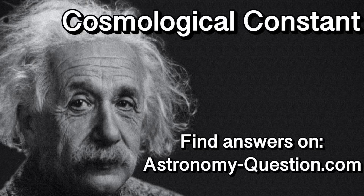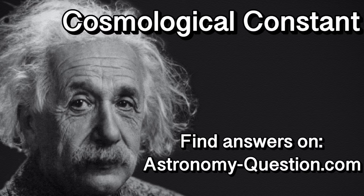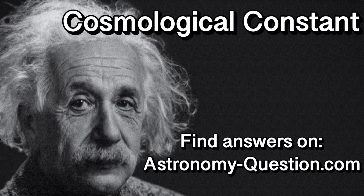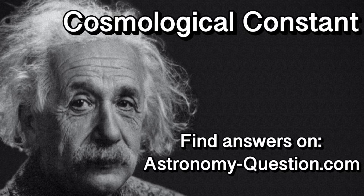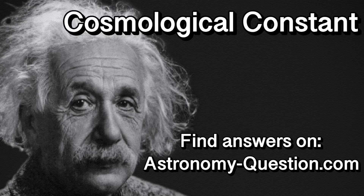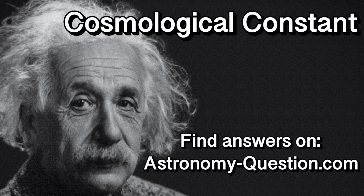What is the cosmological constant? In 1917, Albert Einstein released a paper called Cosmological Considerations and the General Theory of Relativity. It was his intention to use this to explain how his theory of relativity can be used to explain the behavior of stars and galaxies. He encountered a problem when doing his calculations: according to the laws of gravity, the universe should be collapsing in on itself.